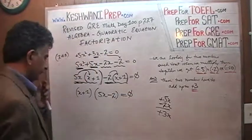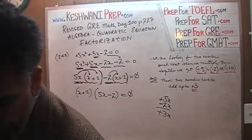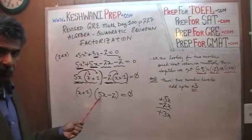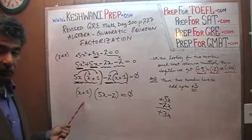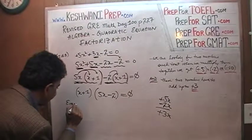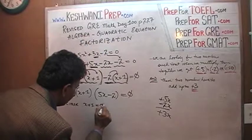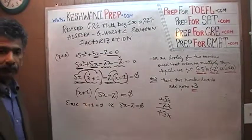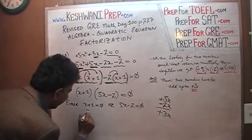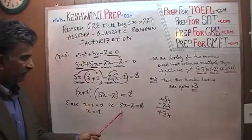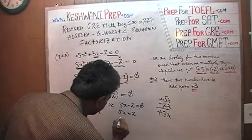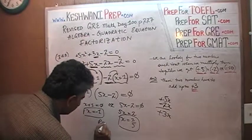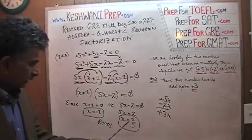We ask: is there anything common between the two parts? Yes — (x + 1) appears in both. Taking that out, we get (x + 1)(5x − 2) = 0. Since the product of two quantities equals zero, either x + 1 = 0, giving x = negative 1, or 5x − 2 = 0, giving x = 2/5. Those are our roots: negative 1 and 2 over 5.